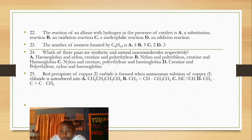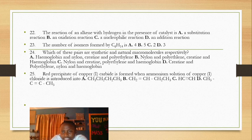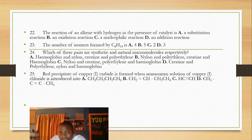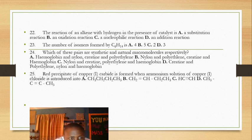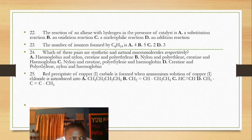Question 24: synthetic and natural macromolecules — this is under polymers. Natural polymers include proteins, carbohydrates, and rubber. Synthetic polymers include nylon and polyethylene. The question asks for synthetic first, then natural as a pair. Nylon and polyethylene are synthetic; protein and hemoglobin are natural. Creatine is synthetic; hemoglobin is natural. The answer is B — nylon and polyethylene as the synthetic pair, and creatine and hemoglobin as the natural pair.